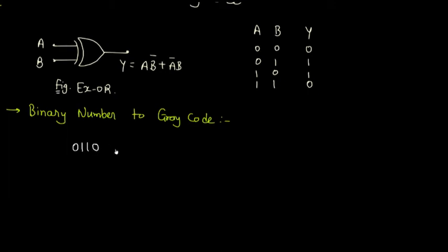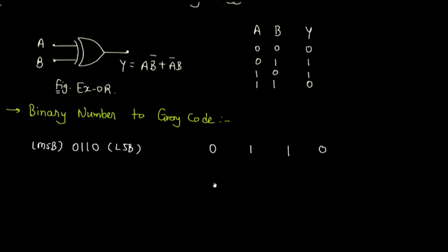In this 4-bit binary number, the last bit is known as the LSB or least significant bit, and the first bit is known as the MSB or most significant bit. The process starts from the most significant bit to the least significant bit. Write down the given number as it is. First step: write the most significant bit as it is.